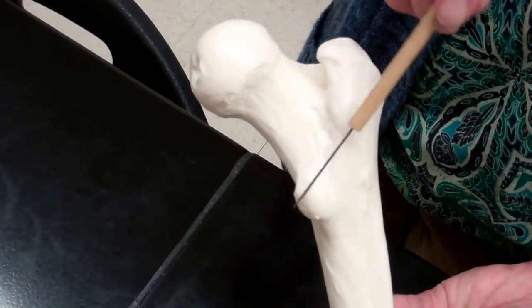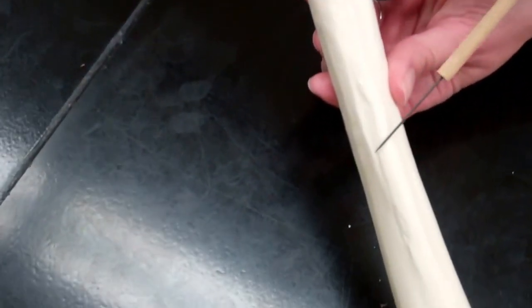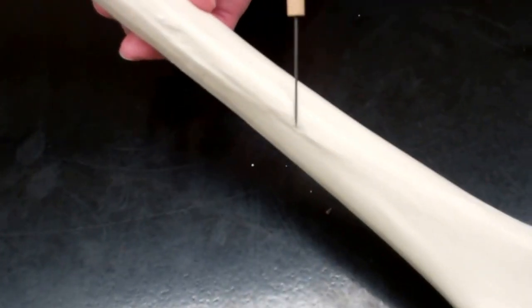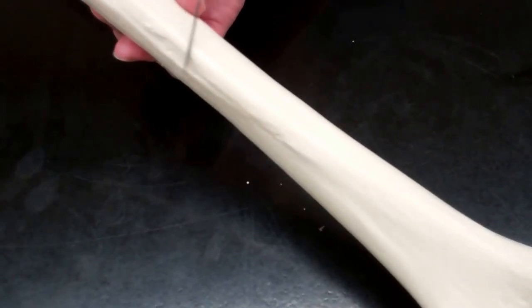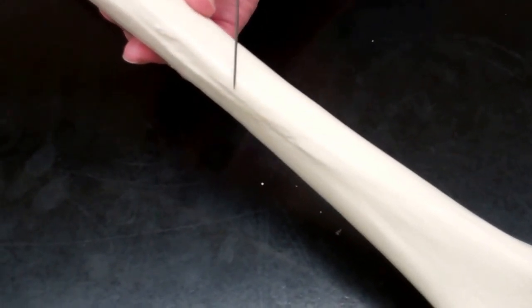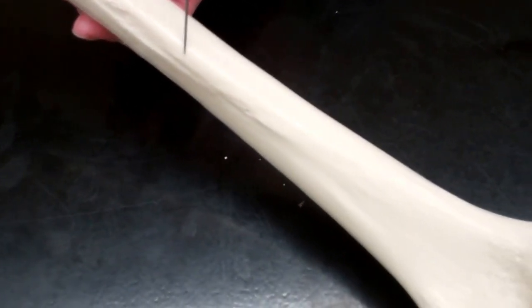As we follow this down the posterior side, you can see that there is a line present there. That line is called our linea aspera. The linea aspera is going to be another attachment point for a lot of muscles we'll talk about later in the semester.